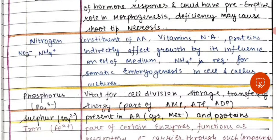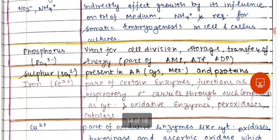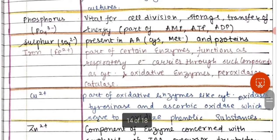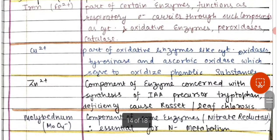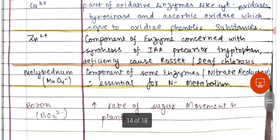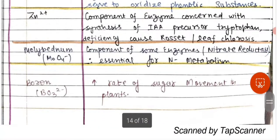Nitrogen is very important for plant growth; it is a constituent of amino acids, vitamins, nucleic acids, and proteins, and indirectly affects growth through its influence on the pH of the medium. Phosphorus is vital for cell division. Sulfur is present in amino acids and proteins. Iron is a part of certain enzymes. Copper is a part of oxidative enzymes like cytochrome oxidase. Zinc is a component of enzymes. Molybdenum is a component of enzymes like nitrate reductase and is essential for nitrogen metabolism.